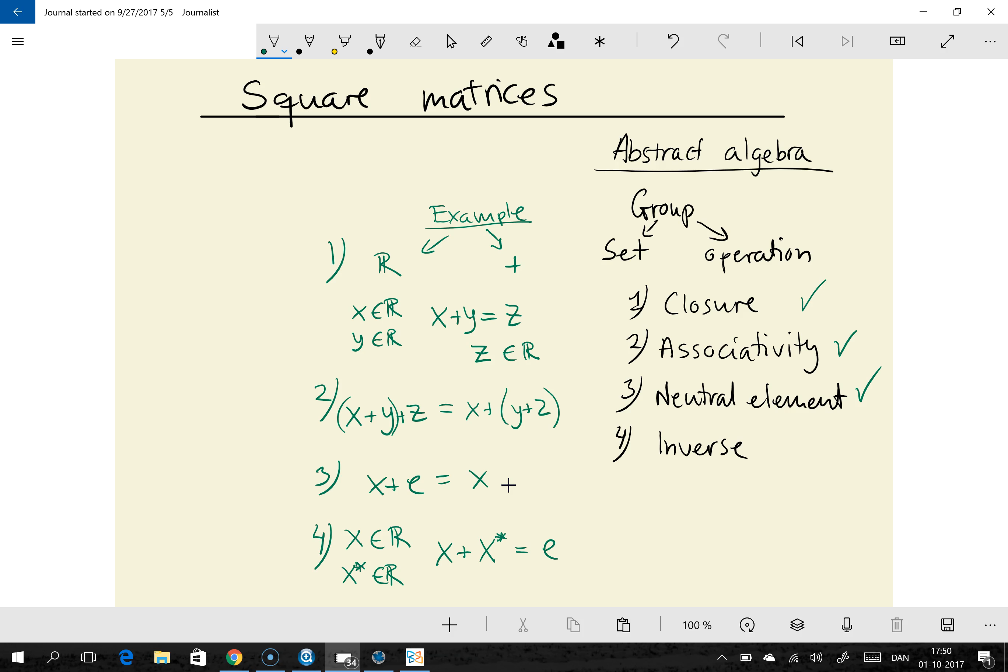So what this means is that every element has an inverse which when added to the element gives the neutral element. And it's pretty obvious that what we're talking about here is that if x is say 3 then the inverse element is just minus 3 because then when you add minus 3 to 3 you get 0 which is the neutral element. So the real numbers satisfy this requirement as well.